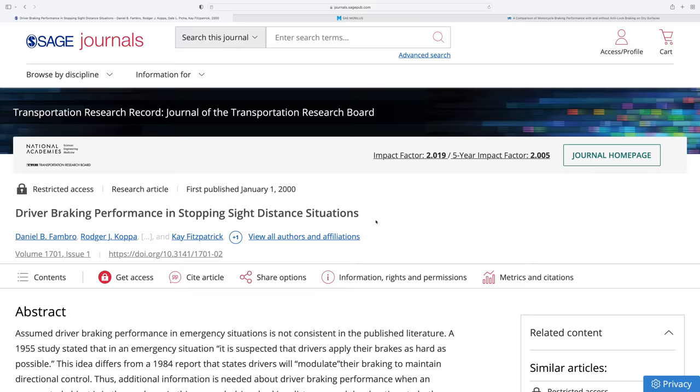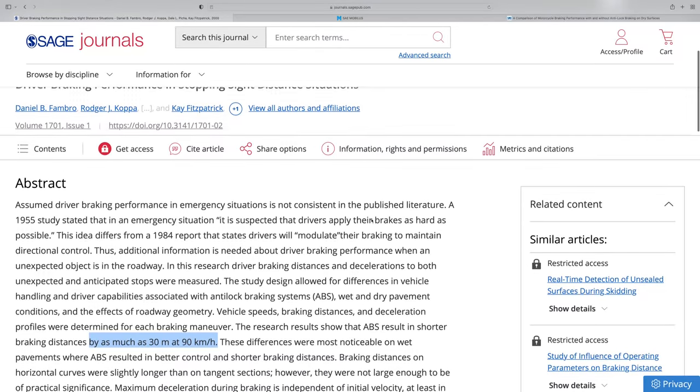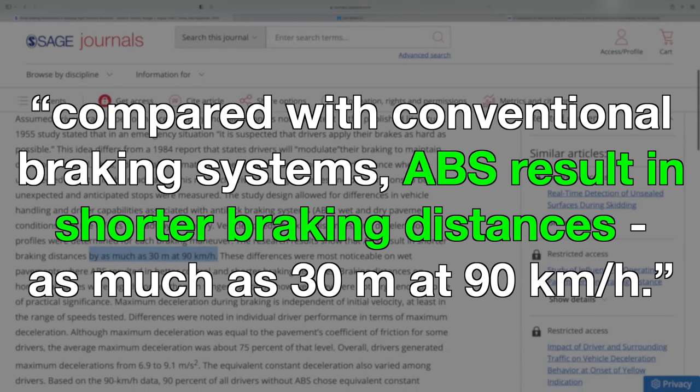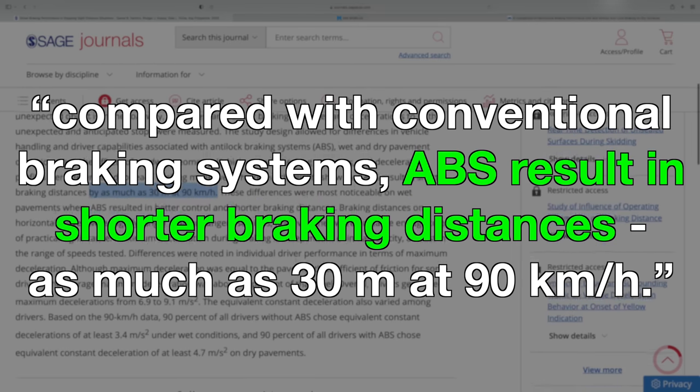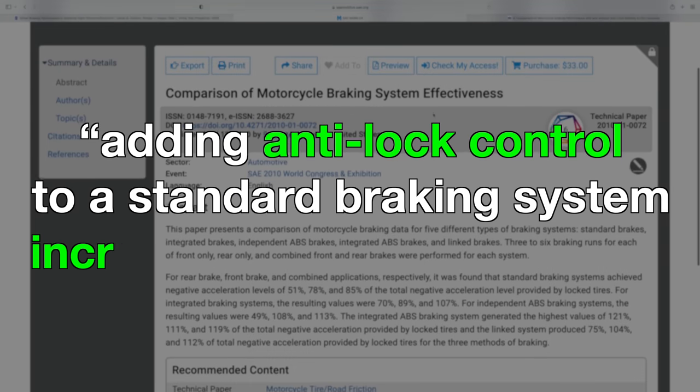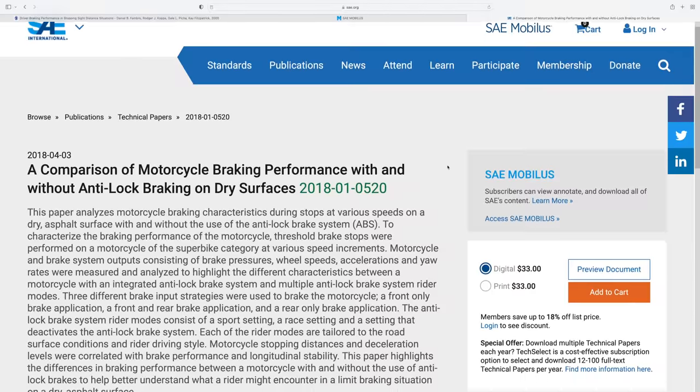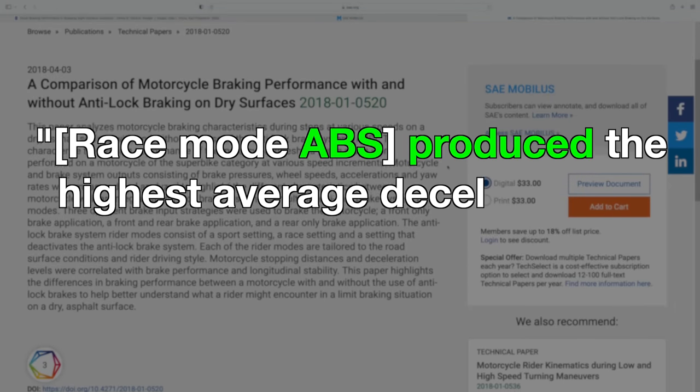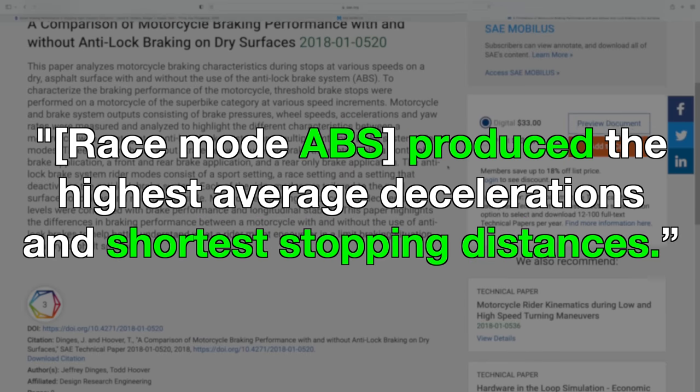Now, if for some reason you're still unconvinced, I found three separate studies performing testing, each about a decade apart, starting with the year 2000. Quote, Compared with conventional braking systems, ABS results in shorter braking distances, as much as 30 meters at 90 kilometers per hour. From 2010, a study looking at ABS on motorcycles, quote, Adding anti-lock control to a standard braking system increases deceleration rate. And from 2018, a study found that on a motorcycle, the race mode ABS configuration, quote, Produced the highest average decelerations and shortest stopping distances compared to not using ABS.